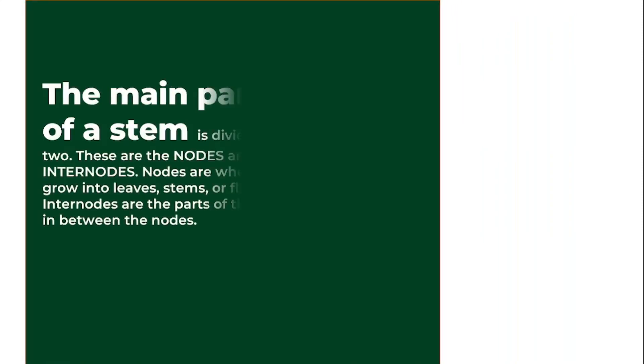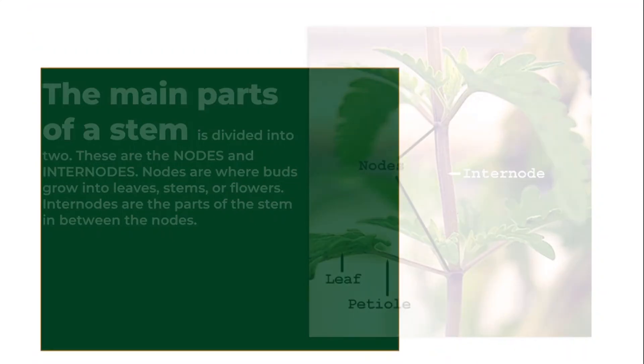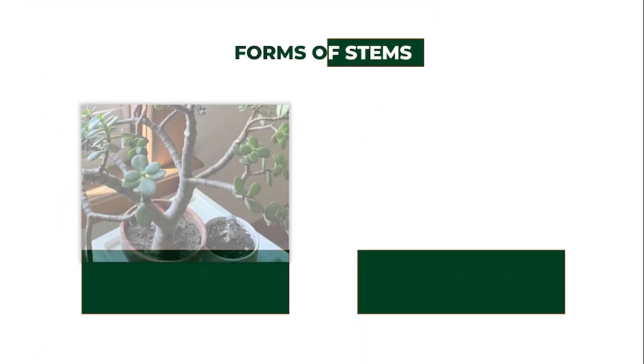The main parts of a stem are divided into two: we have the node and the internode. The nodes of a plant are the points at which the buds develop into leaves, flowers, and fruits, while the internodes refer to the space or distance between each node. We have the forms of stems, under which we have the strong or erect stems and the weak stems.